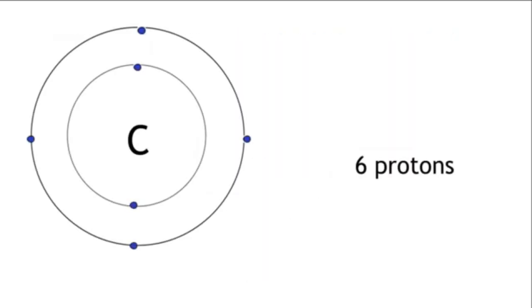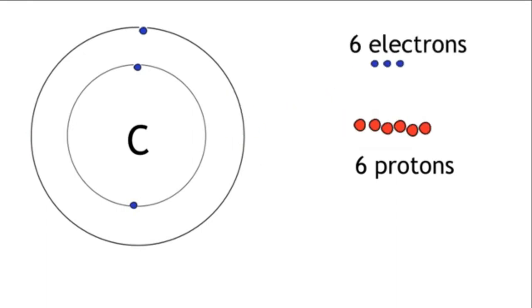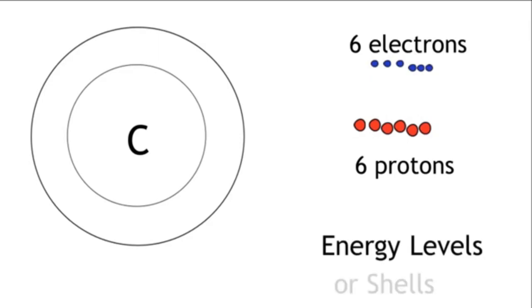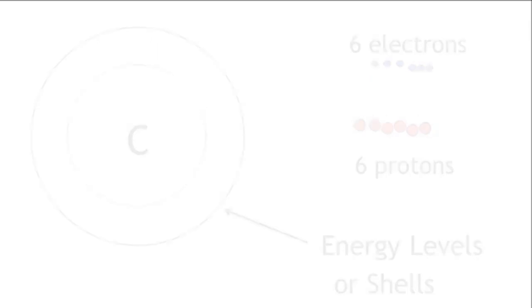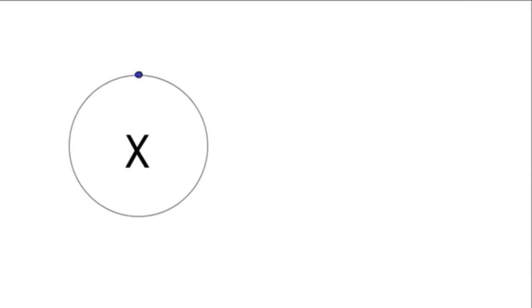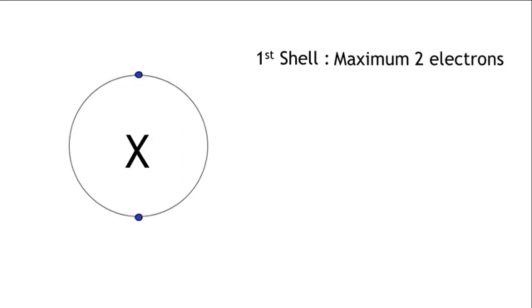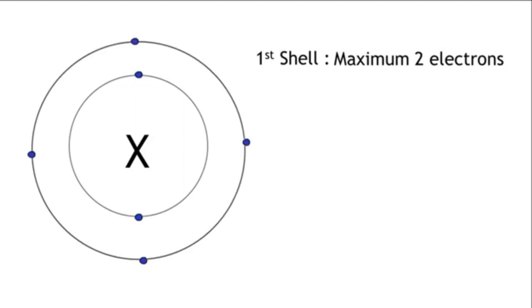So, in a neutral atom of carbon, there are six protons, which means there must be six electrons. The electrons in the atom are organised around the nucleus in different energy levels, or shells. Shells can only hold a certain amount of electrons. The first, and innermost shell, can only hold a maximum of two electrons. The shells which come after this can hold a maximum of eight electrons.